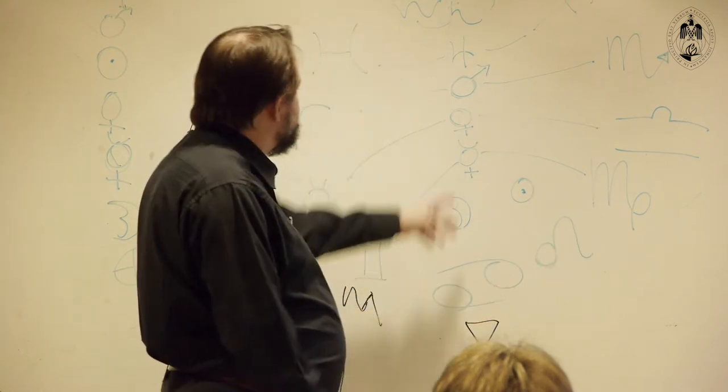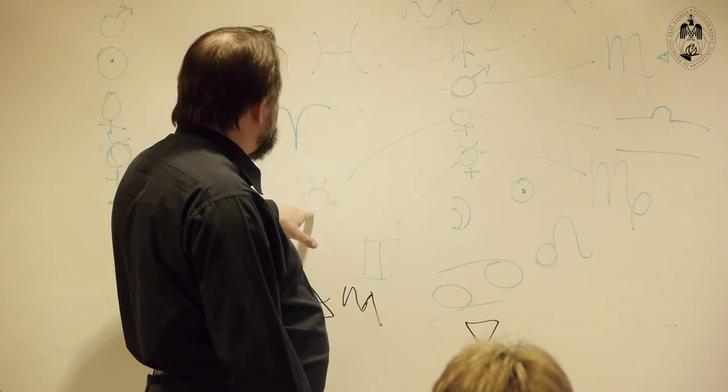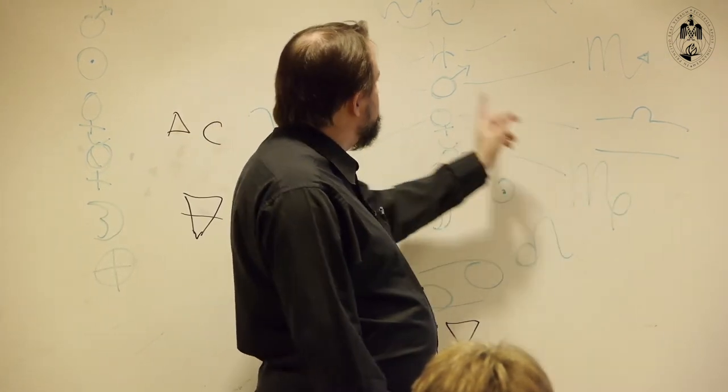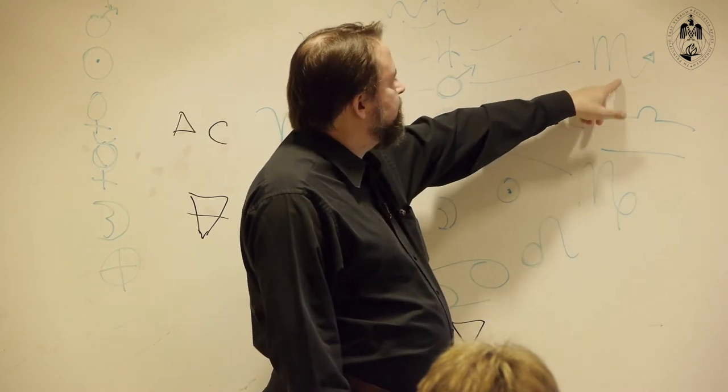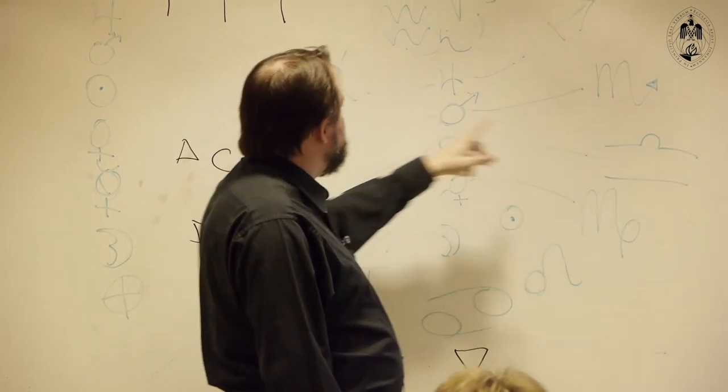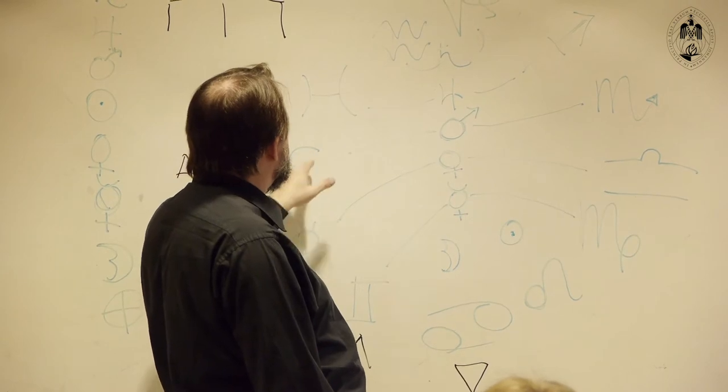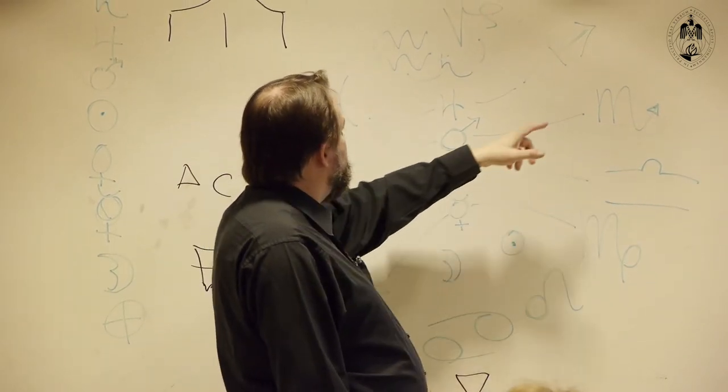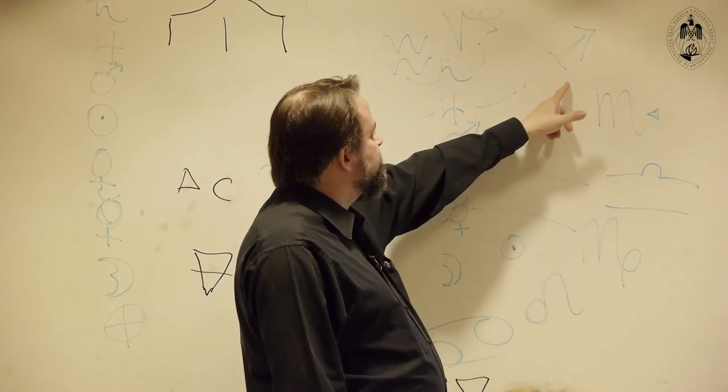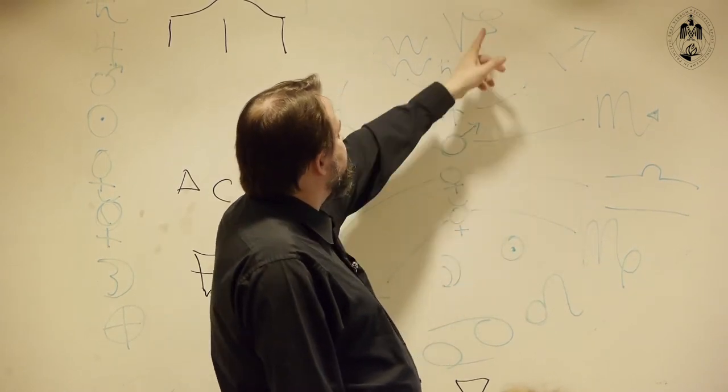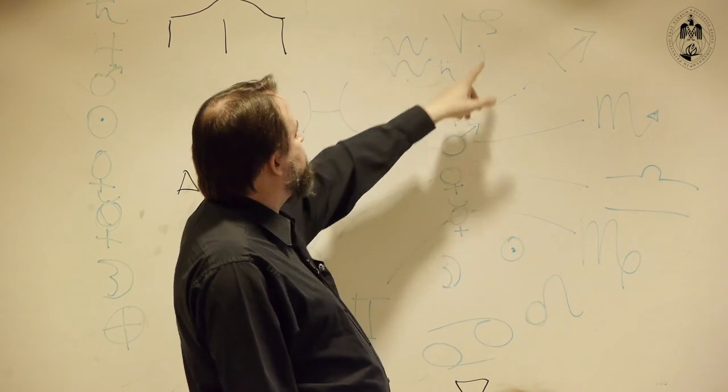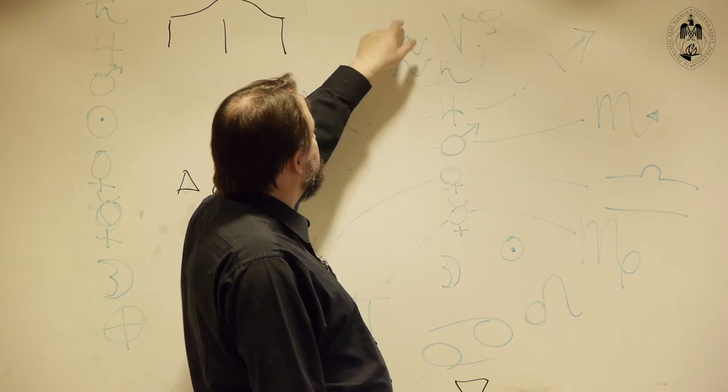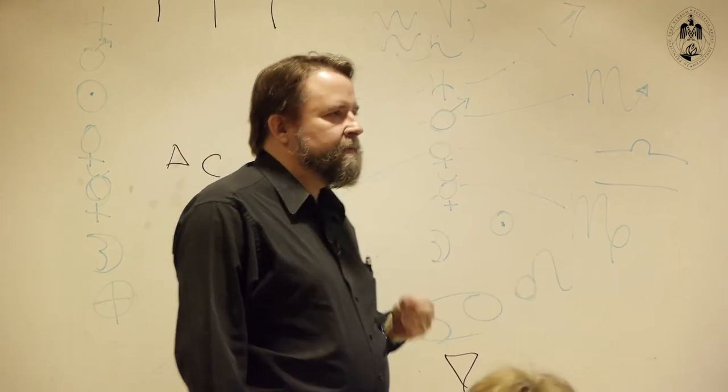So each of the other planets rules a day and a night sign. If we go to Venus - night sign Taurus, day sign Libra. We go to Mars - night sign Scorpio, day sign Aries. We go to Jupiter - the night sign is Pisces, the day sign is Sagittarius. And Saturn gets these two up here at the top - Capricorn for night and Aquarius for day.